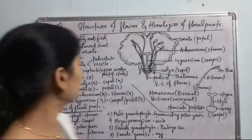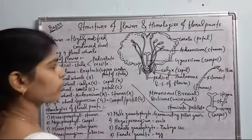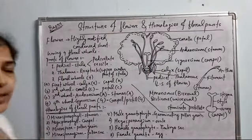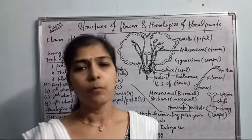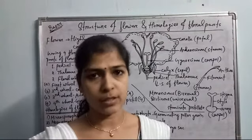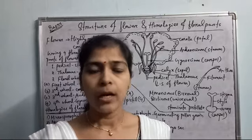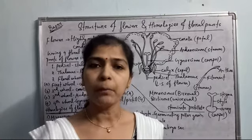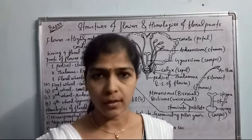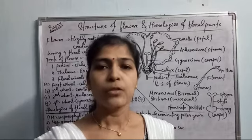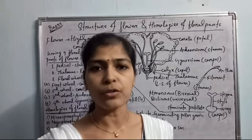Let's look at the structure of a flower and the homologies of floral parts. A flower is a very condensed, modified shoot of the plant, and it is the reproductive organ of the plant. For any flowering plant, reproduction is based upon the flowers.